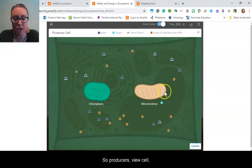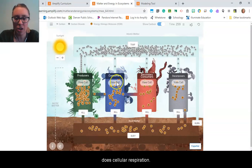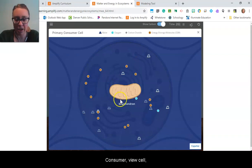So producers - view cell - mitochondria, check, does cellular respiration. Consumer - view cell - mitochondria, check, does cellular respiration.